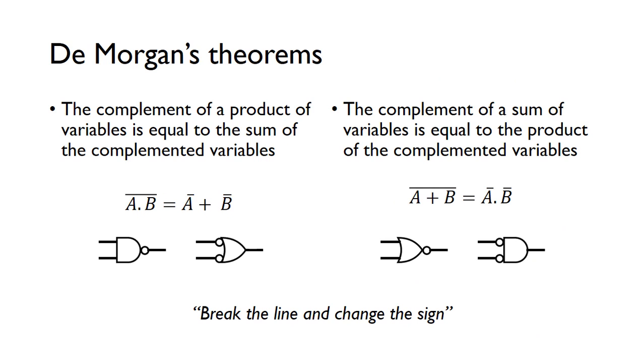Now De Morgan's theorems, I said these are very important, and we'll come to use those later. The first law states that the complement of a product of variables is equal to the sum of the complemented variables. We can write that down using an equation. You can see on the left, this is a complement. We know A AND B is a product, so we complement the entire thing. We can see that's actually a NAND function, that gives us a NAND gate. And that's equal to the sum, so we know we do a sum using an OR gate. So a NAND gate is equal to an OR gate with negative inputs. Here we put the bubbles on the input just to show that the inputs are complemented.